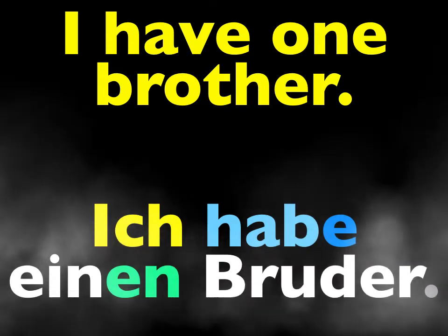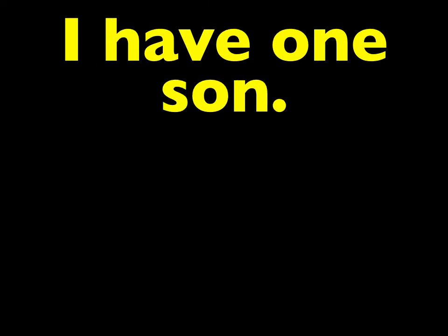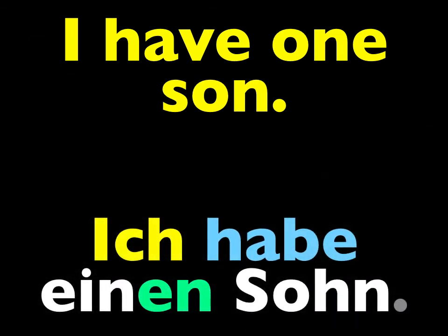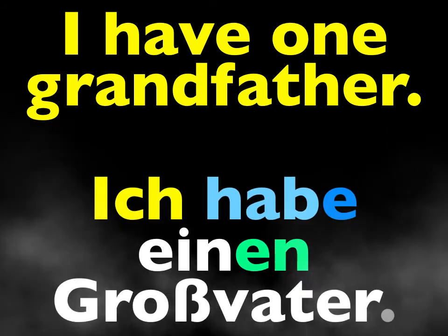As you learned recently, when you have something, that thing is a direct object. And when that direct object is masculine, the word "ein" for one becomes "einen." So the way to say "I have one brother" is: Ich habe einen Bruder. Repeat that: Ich habe einen Bruder. That would be true of other male family members. For example, repeat the way to say "I have one son": Ich habe einen Sohn. Repeat the way to say "I have one grandfather": Ich habe einen Großvater.